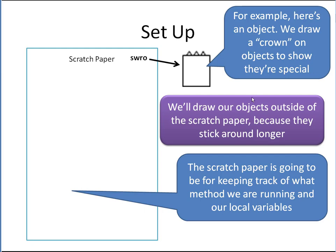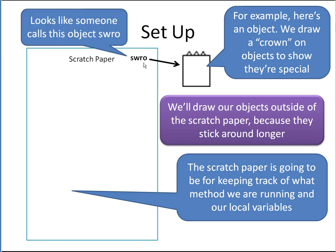Here's one object — I drew this little crown on the object just to show that it's special. Somewhere earlier on the scratch paper, this object was called SWRO, for no apparent reason except that those happen to be the first four keys somebody clicked on the keyboard. SWRO is the local variable here, and it has an arrow out into object space, because object space is everything that's not our scratch paper, pointing at this object.